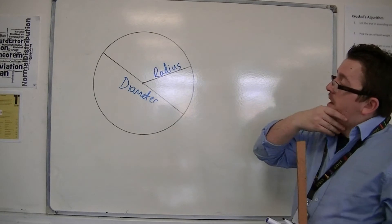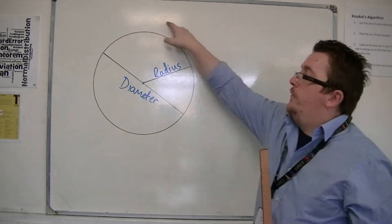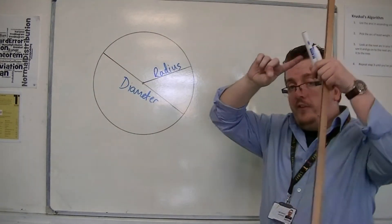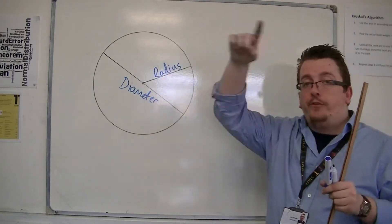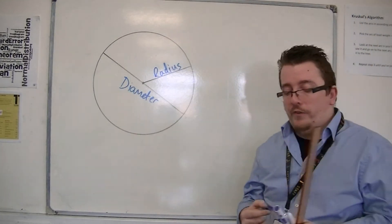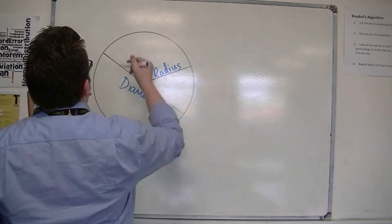And another name for something is if I go all the way around the outside of the circle, so the total length of the outside, so the perimeter of the circle, that is known as the circumference.